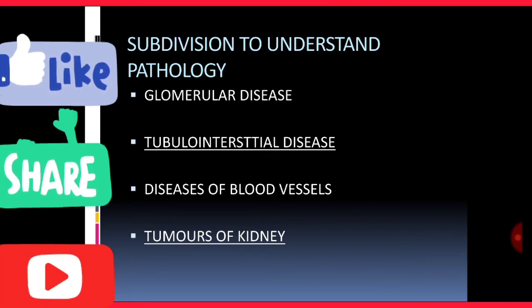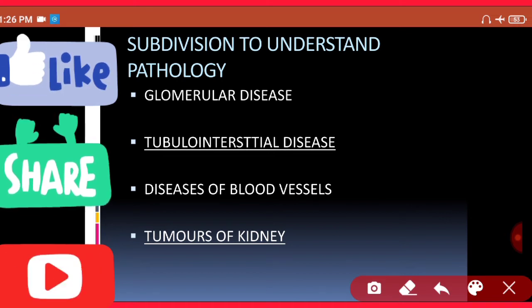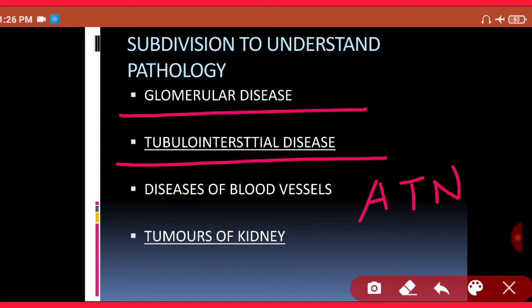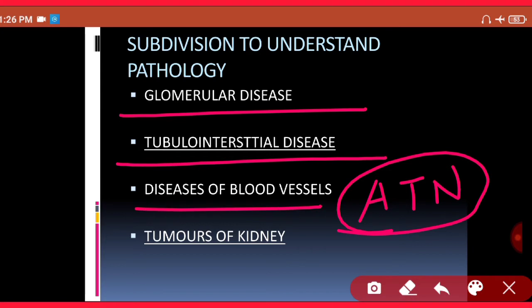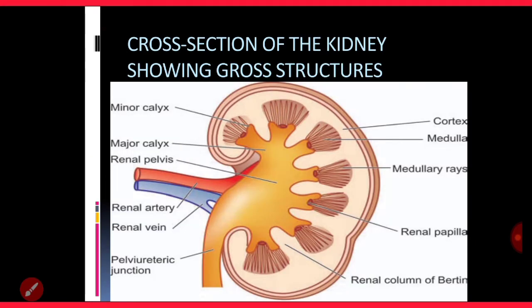To understand the pathology of kidney, Robbins' book has divided the pathology into four portions. The first is glomerular disease, such as glomerulonephritis. The second is tubular interstitial disease, which includes acute tubular necrosis and tubular interstitial nephritis — our today's lecture. The third involves disease of blood vessels of the kidney like arteriosclerosis, and the fourth is tumors of the kidney.